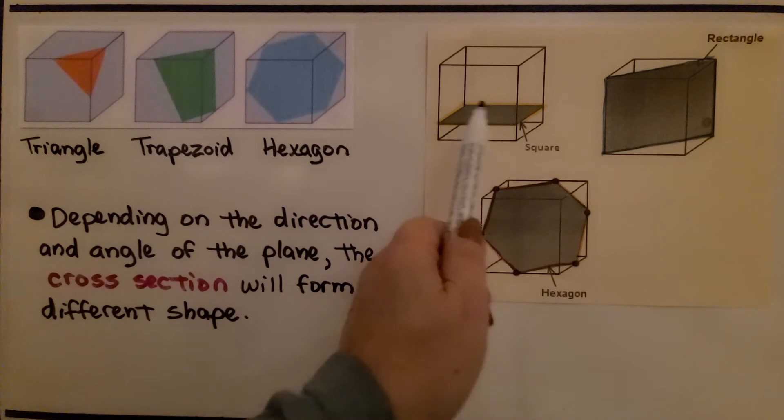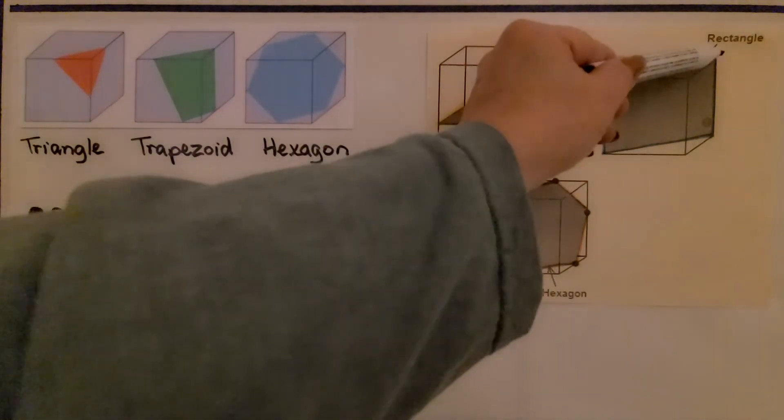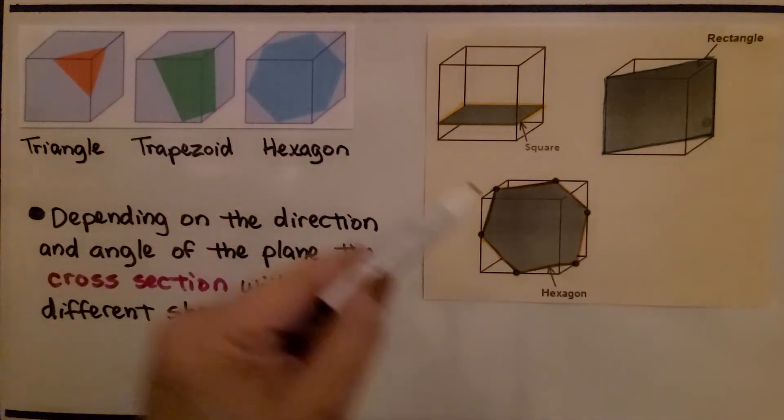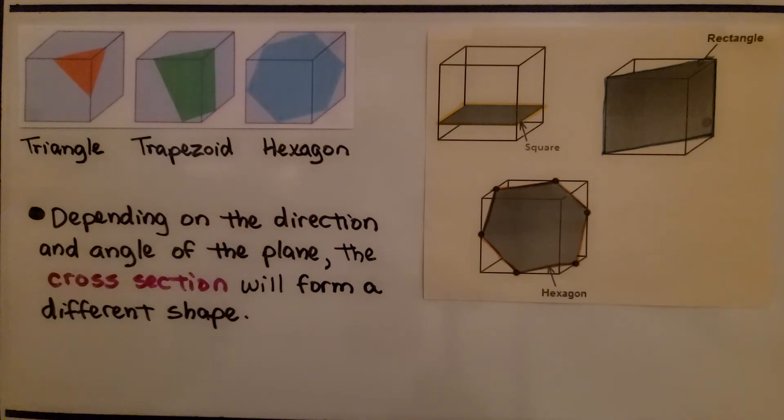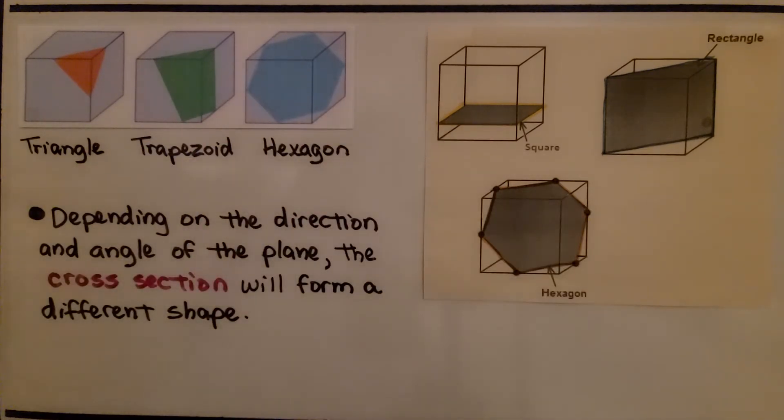We could square. We could do it like this on a slant from this corner to this corner and do a rectangle. And this is the hexagon. So it's kind of slanting back a little bit and it's on an angle. So depending on the direction and angle of the plane, the cross section will form a different shape.